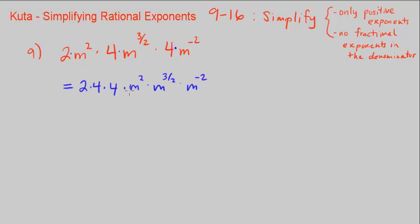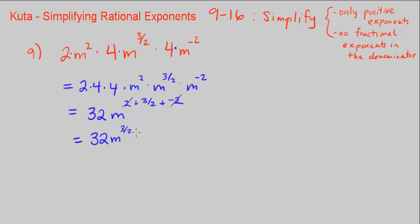We can do these in this order: 2 times 4 is 8, and 8 times 4 is 32. These all have m as the base, so we add all the exponents: 2 plus 3 halves plus negative 2. The 2 and negative 2 cancel out, so we're left with 32m to the 3 halves power.